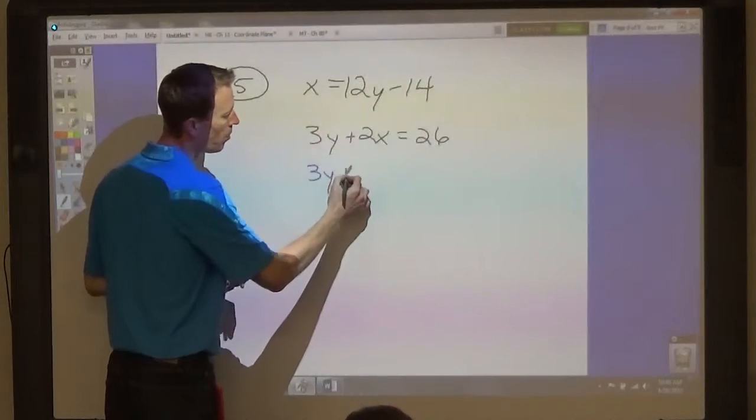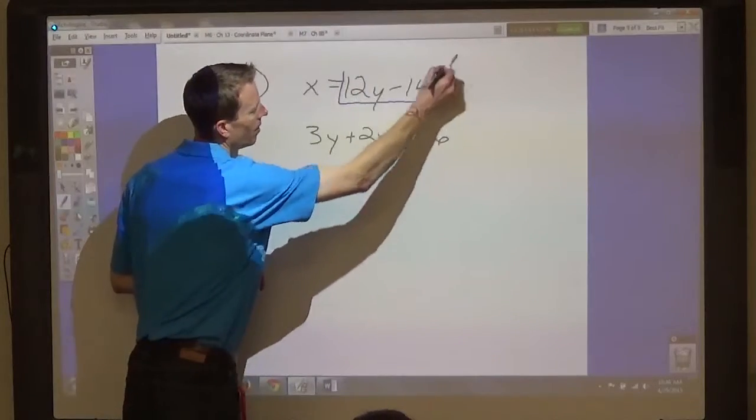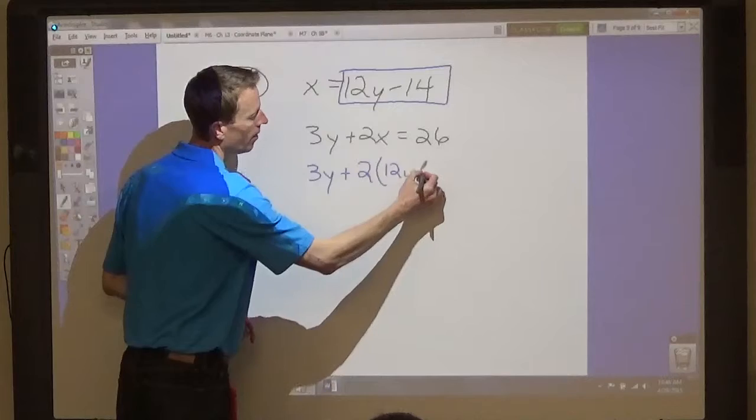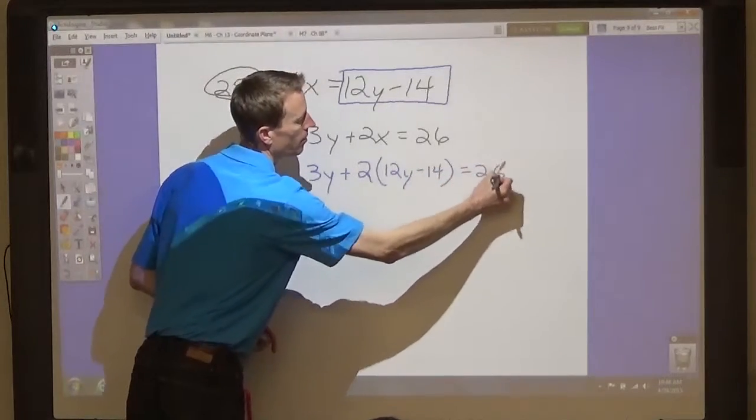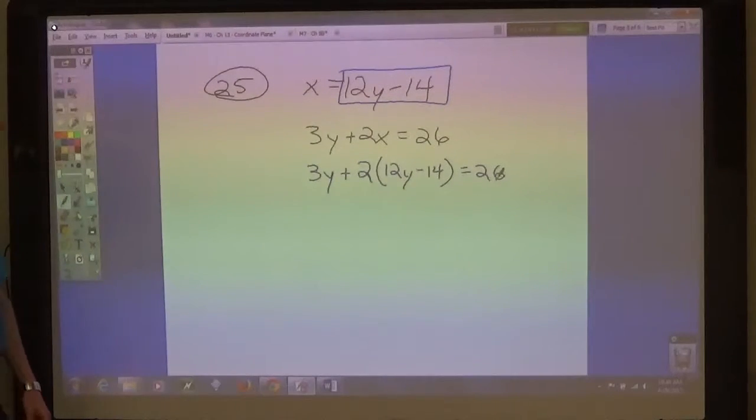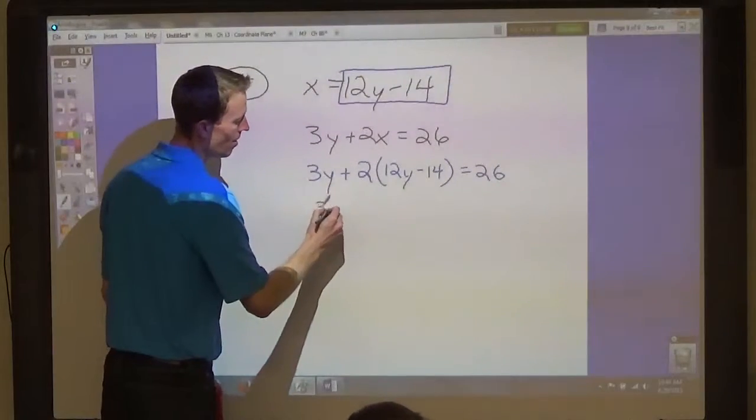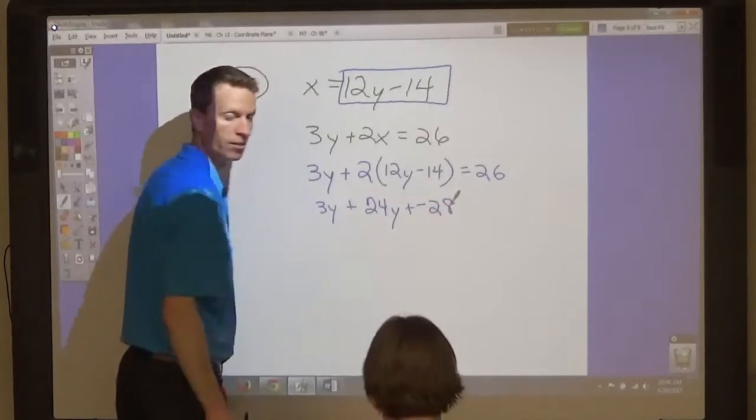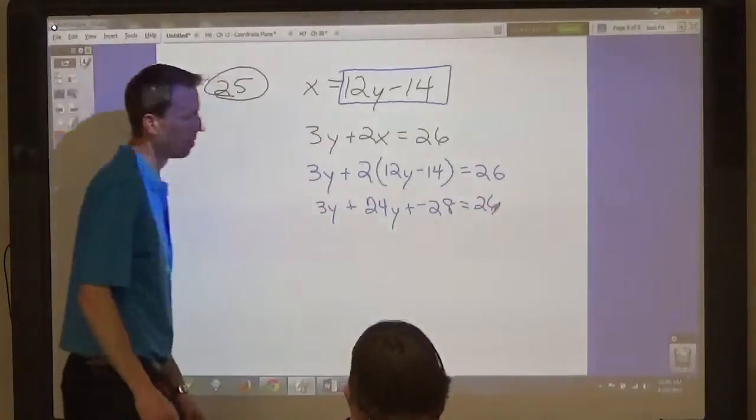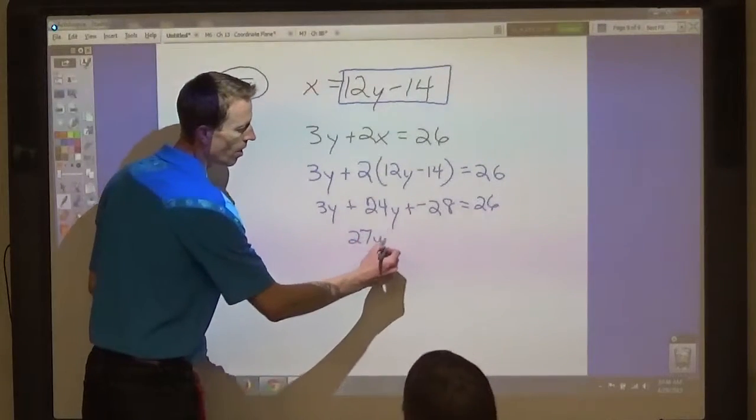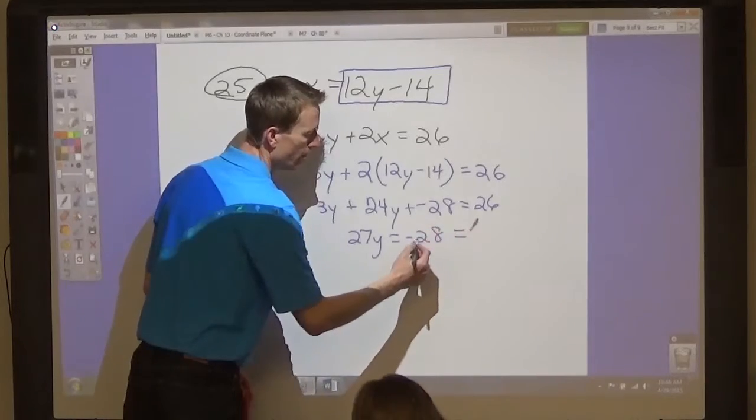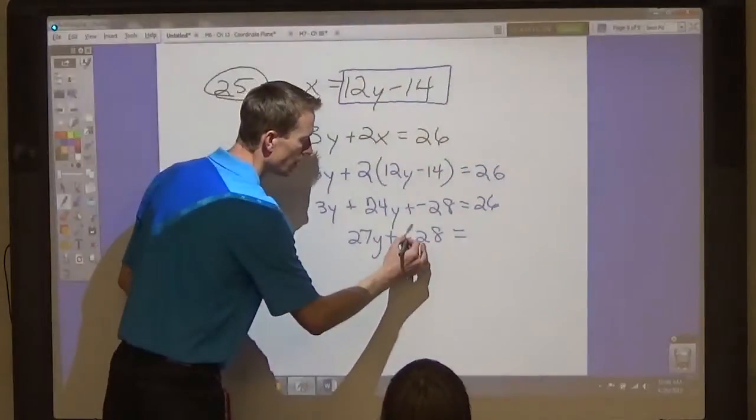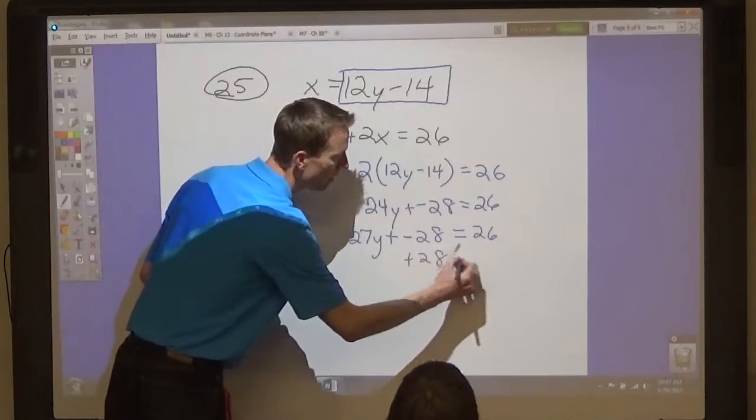So we know that 3y plus 2 times x, which x is 12y minus 14. So 2 times 12y minus 14 equals 26. So 3y plus 24y plus negative 28 equals 26. Then 27y equals... plus 28. 27y equals 54. Y equals 2.